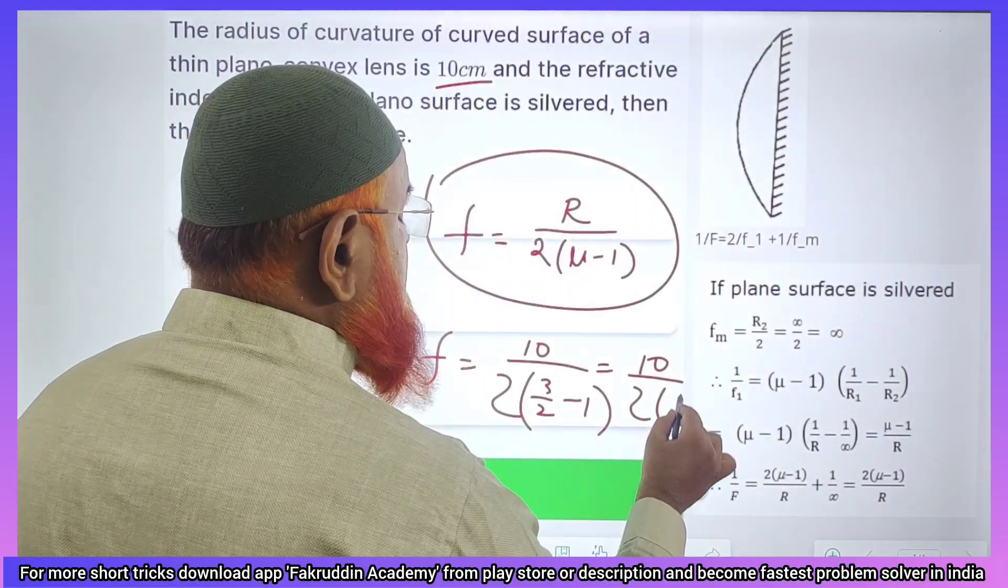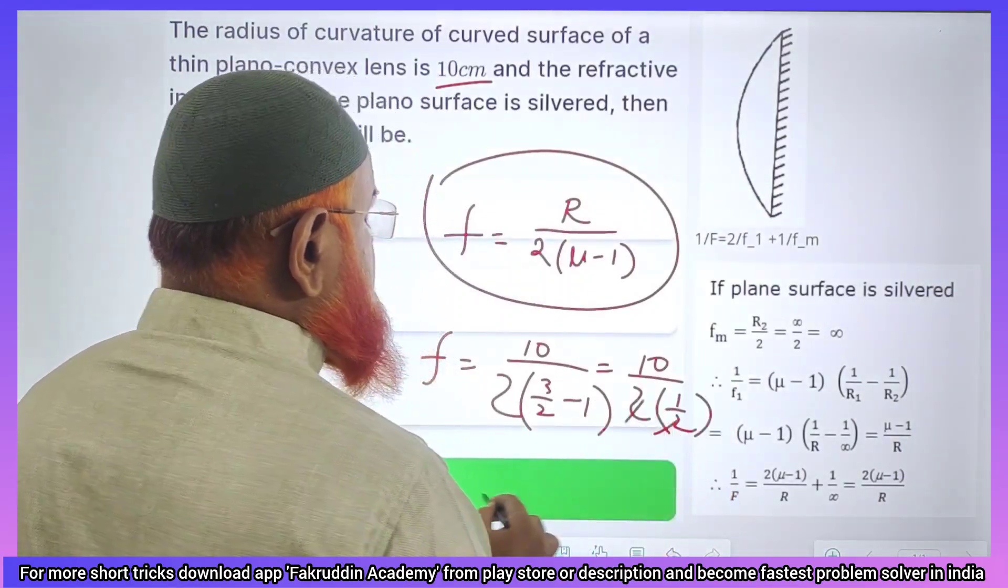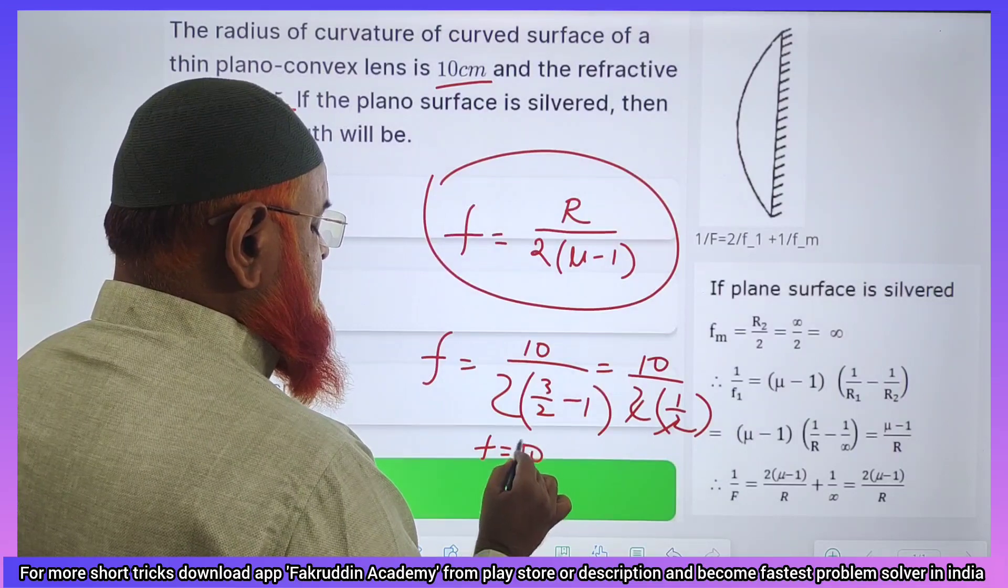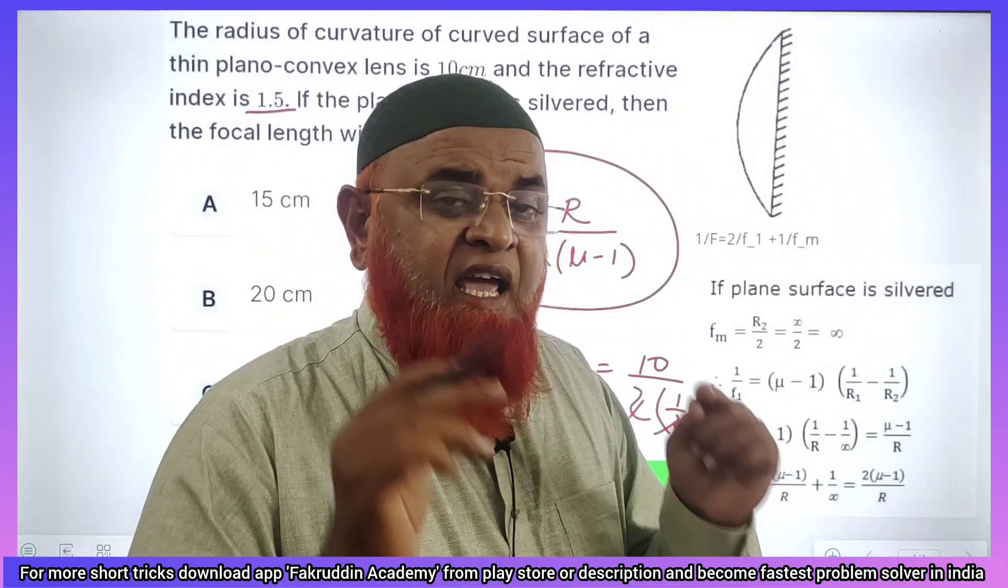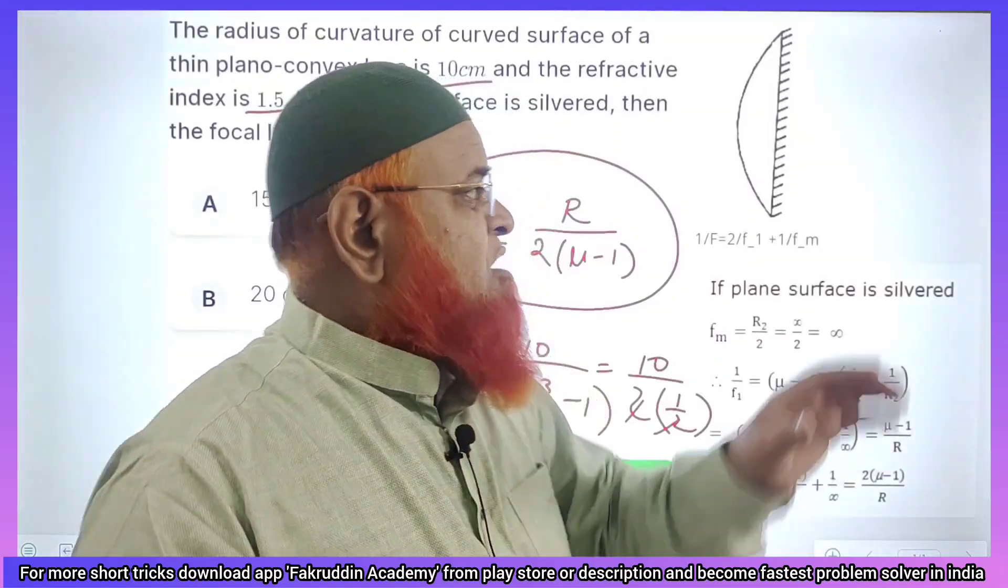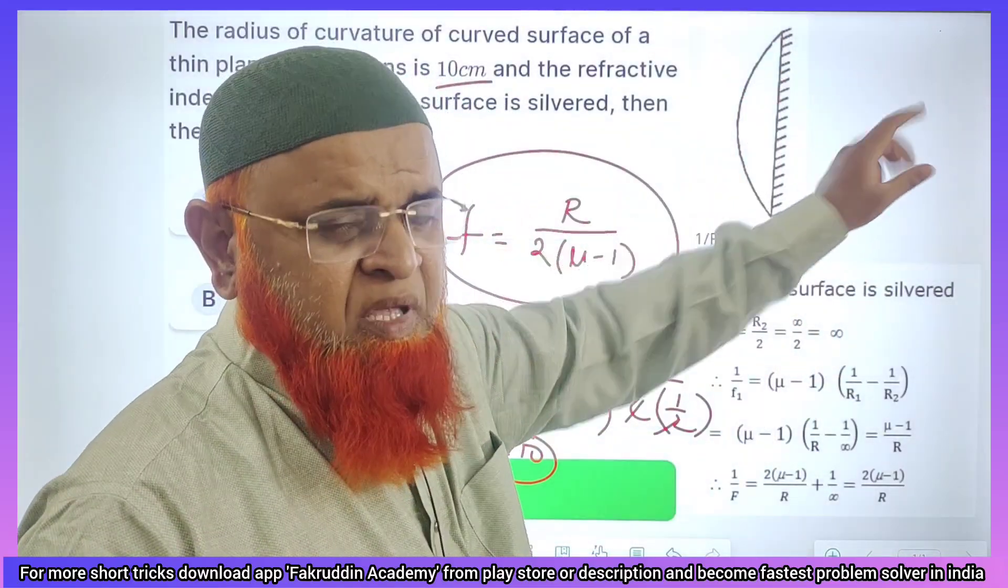So what is going to happen here? 10 by 2 into 3 by 2 minus 1 is nothing but 1 by 2. So 2 and 2 gets canceled, f is equal to 10. That's it, this is a simple shortcut formula.